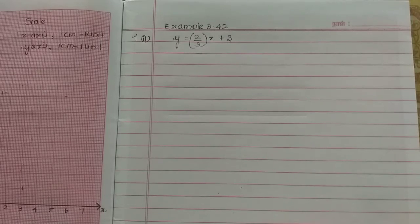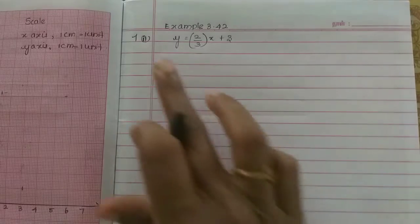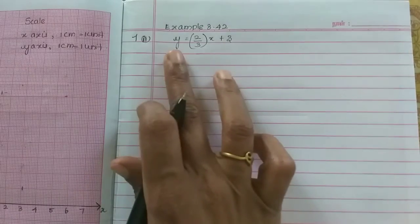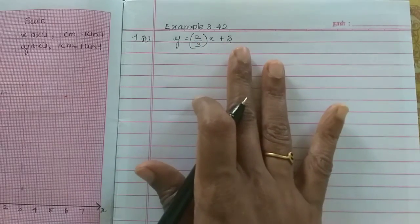Hi students, in this video we have a second subdivision in example 3.42: y equals 2/3 times x plus 3. That's what we got.